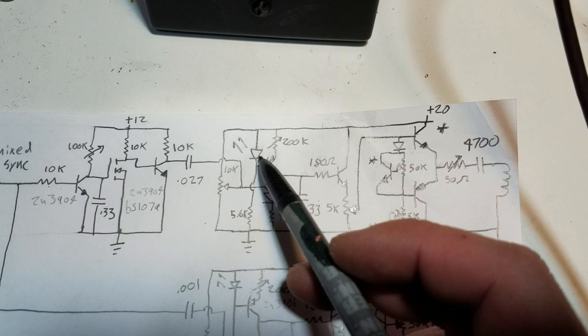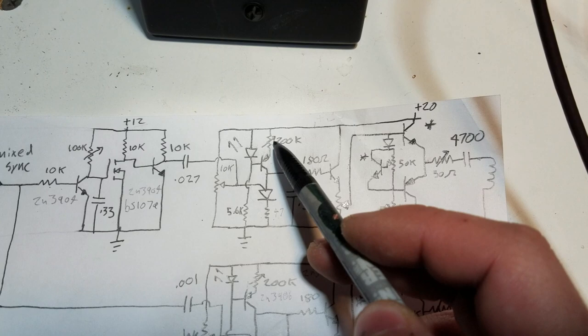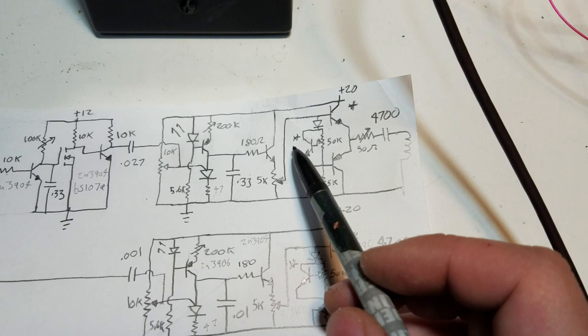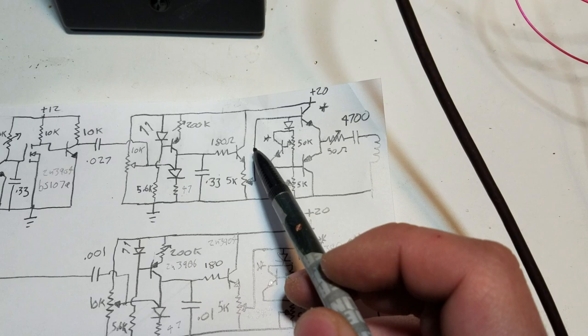Current source is just made up with a PNP transistor and a LED acting as a Zener diode, basically. So depending on the value of this resistor, that will change the amount of current flowing through here. The output of here gives us a ramp waveform, and that just goes into this emitter follower right here, and that's basically just a current amplifier. This is a very high impedance signal, and we need to buffer that up in order to drive our output stage.